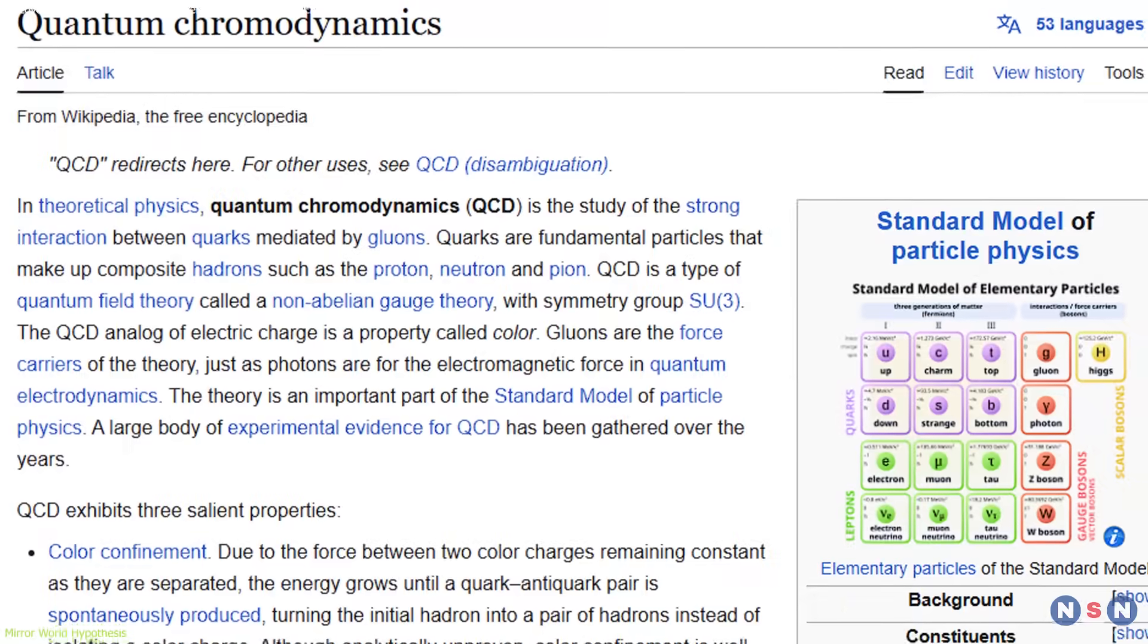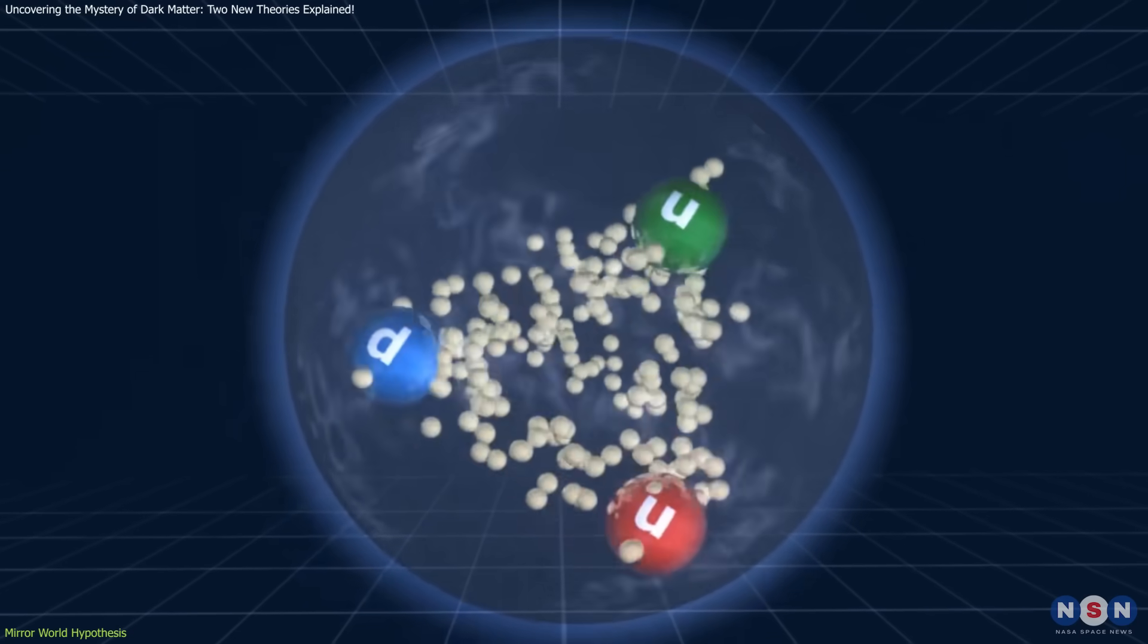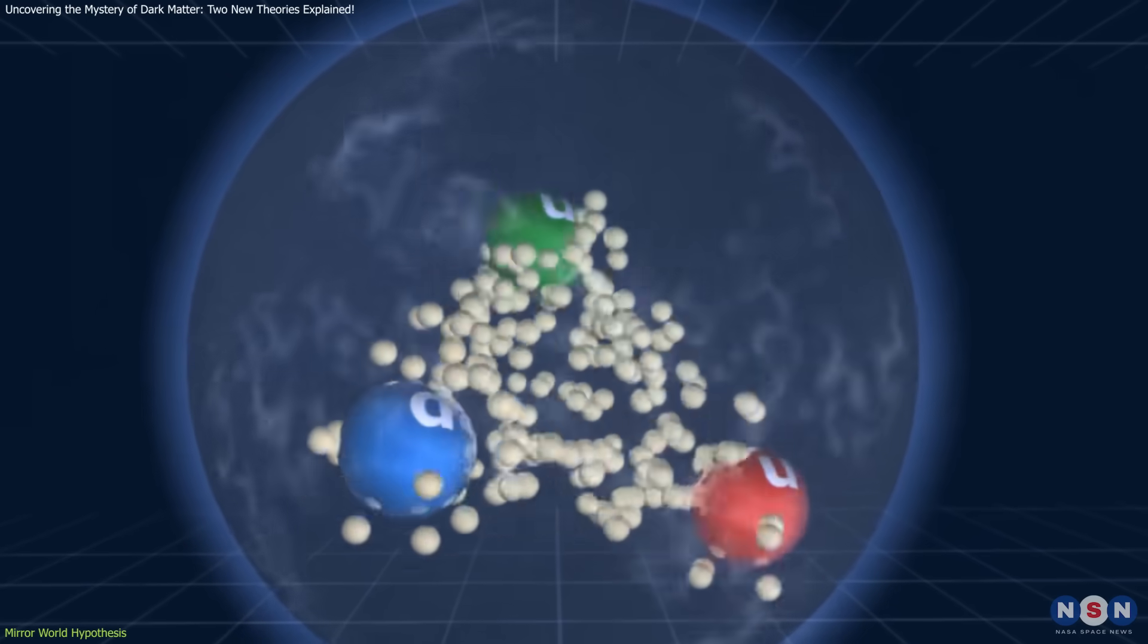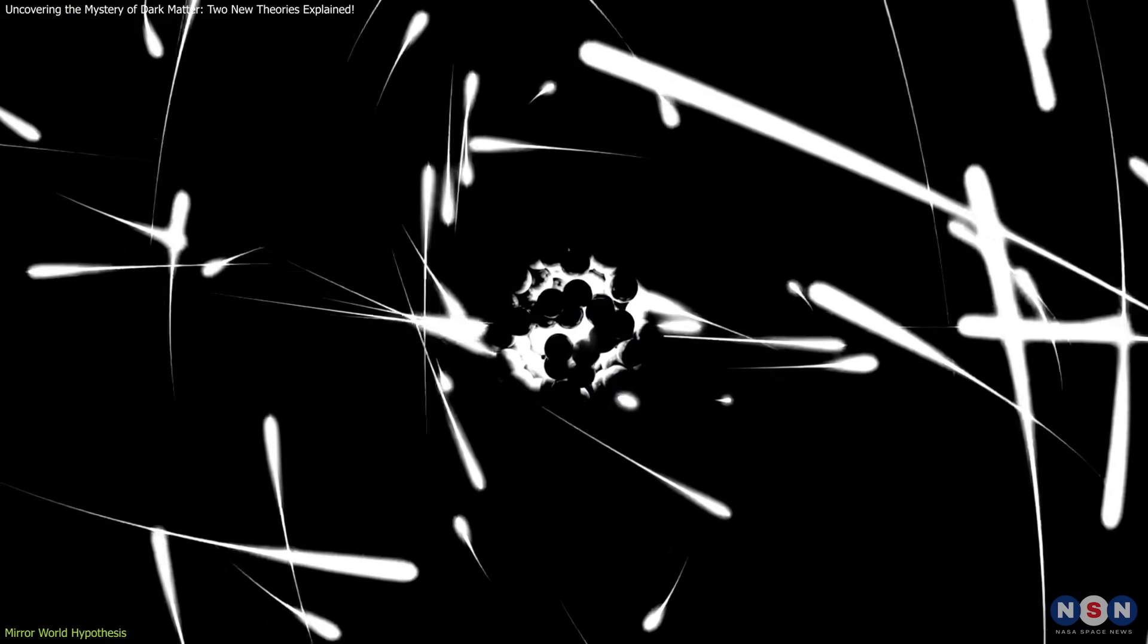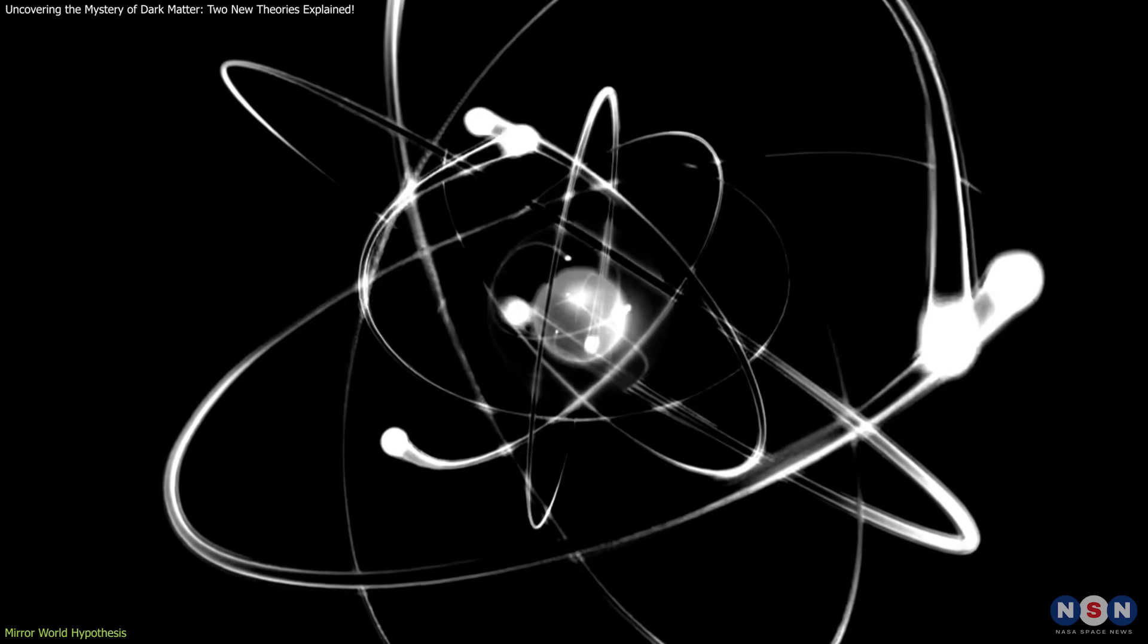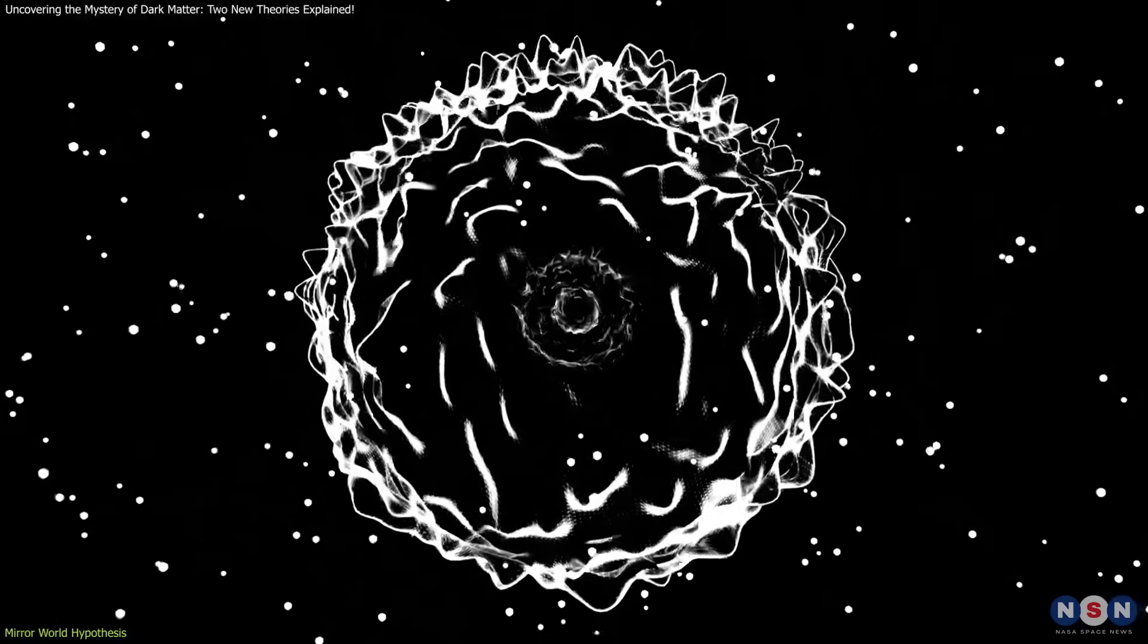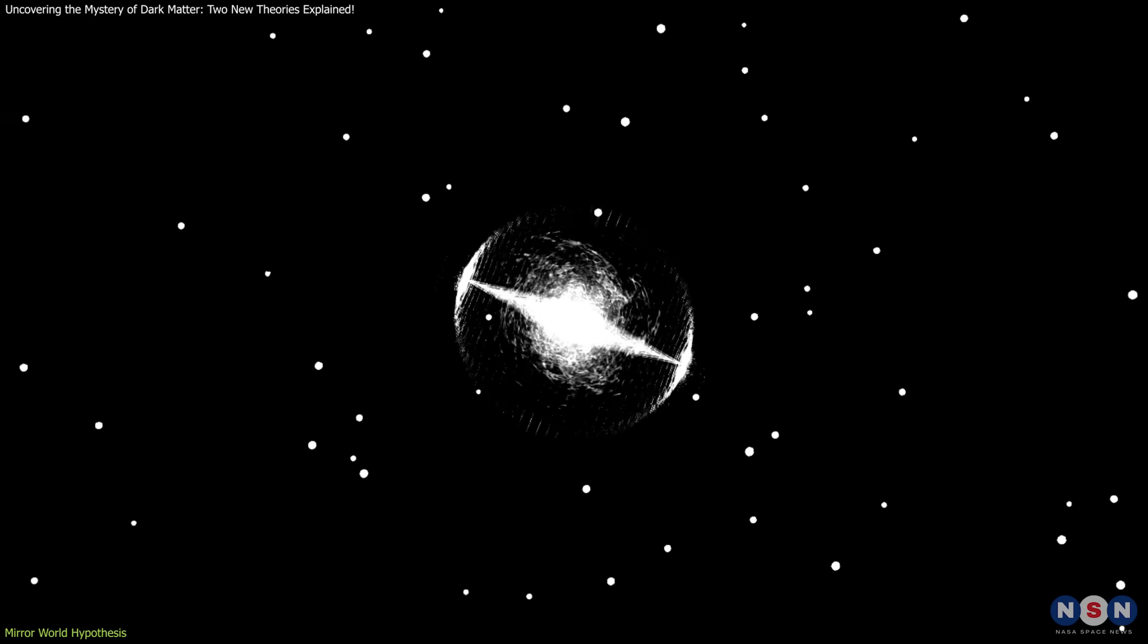The theory builds on quantum chromodynamics, QCD, the theory that describes how quarks are held together inside protons and neutrons by the strong nuclear force. In the mirror world, particles known as dark quarks and dark gluons could form dark baryons, which are composite particles similar to protons and neutrons. Under certain conditions in the early universe, these dark baryons might collapse into small, stable, black hole-like objects.